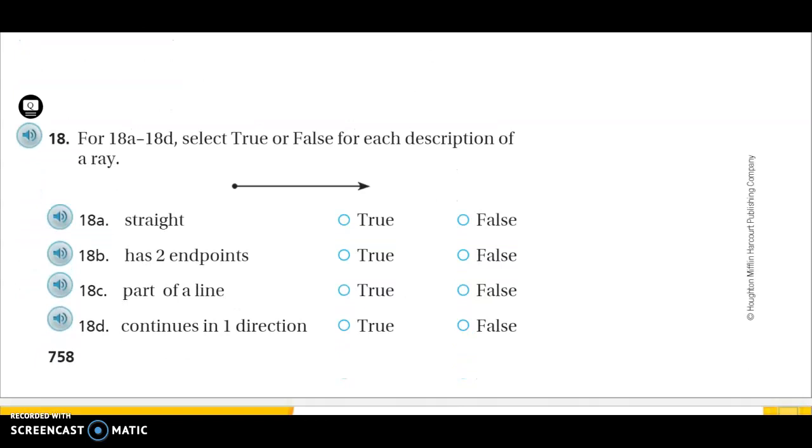And number 18, 18a through d. Select true or false for each description of a ray. 18a, is it straight? True or false? It has two endpoints. True or false? C, it has part of a line. True or false? Continues in one direction. True or false? Answer that. And this will complete our first part.